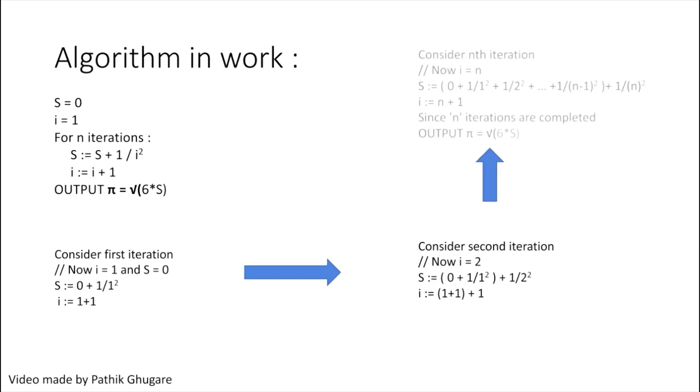If we go on doing this till n iterations, then at the nth iteration we will have i equals n. So this will be our series S, and then i will get incremented to n plus one. But since iterations are over, there is no use of i now, so we'll output this value of pi. Now let's see the coding part.